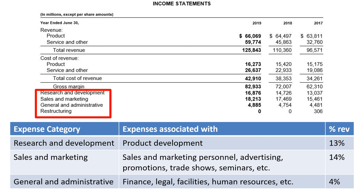Sales and marketing expenses include payroll, employee benefits, and other headcount-related expenses associated with sales and marketing personnel, and the costs of advertising, promotions, trade shows, seminars, and other programs — 14% of revenue in fiscal 2019. General and administrative expenses include headcount and outside services related expenses of functions such as finance, legal, facilities, and human resources — 4% of revenue in fiscal 2019.